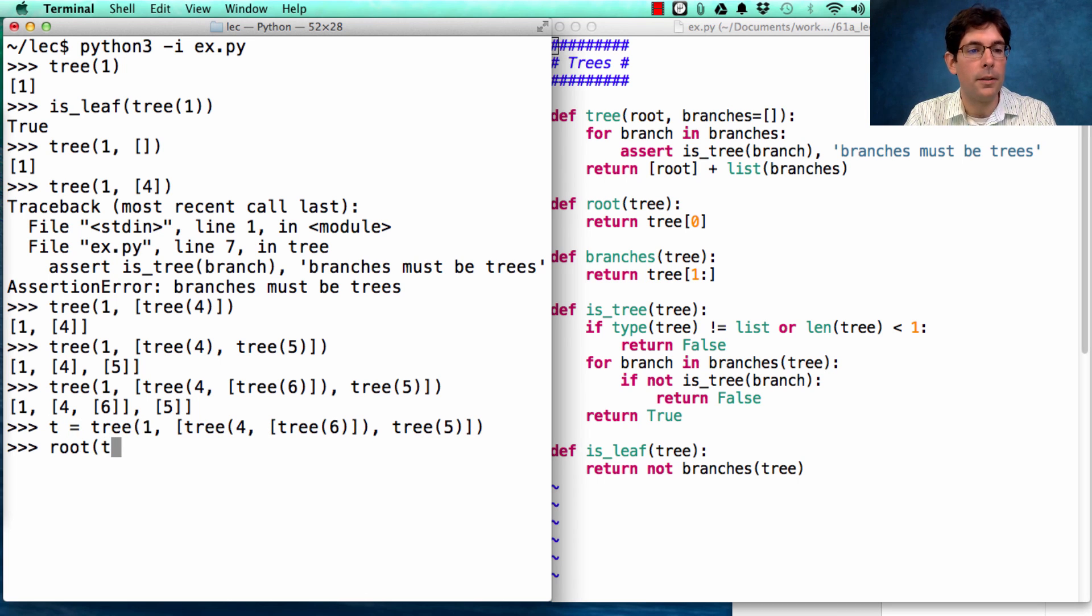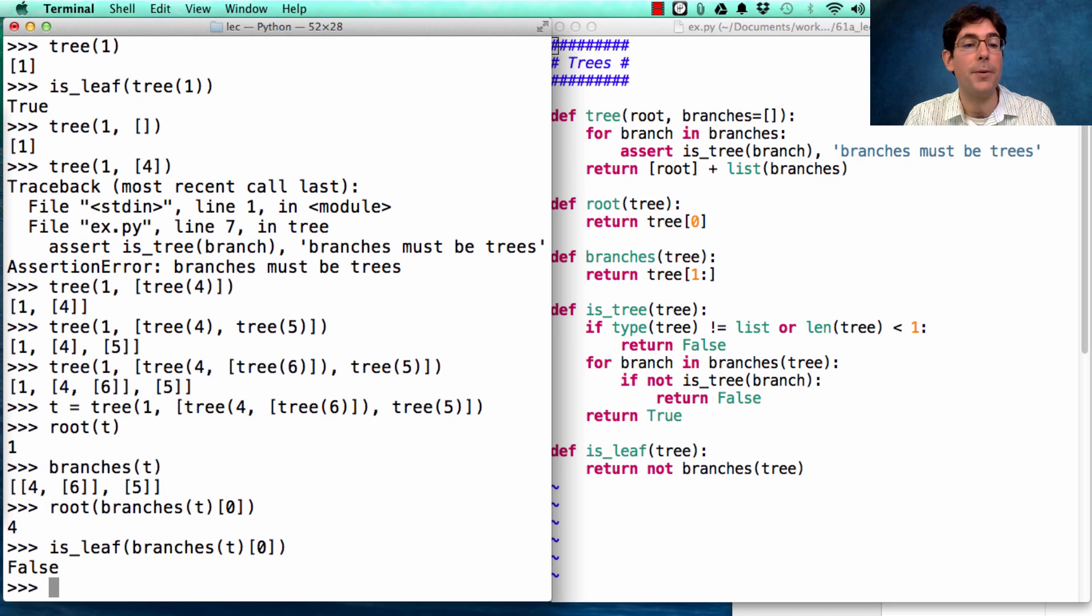Let's call that t. What's the root of t? 1. What are the branches of t? Well, there they are. Most importantly, what's the root of the branch at index 0? Well, that's how I get the 4. So, branches is a sequence. I can use element selection in order to pick which branch I want to talk about. And then, if I want to know what value is there, in order to use my data abstraction correctly, I call the root function to get the root value. And I can also ask, is that a leaf? Hopefully, it's not. No, it's not a leaf because it has its own branch containing 6.